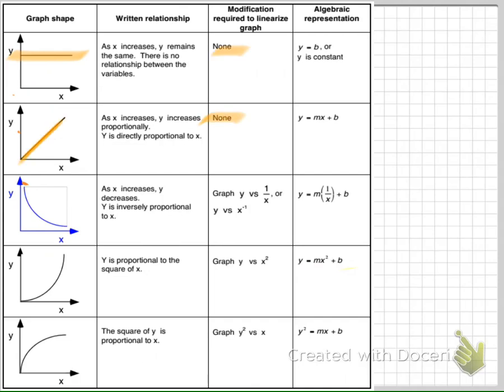But if you look down here, if we have a graph that looks like this downward slope right there, then we're going to want to graph y versus 1 over x. So the x will change. The y will not.